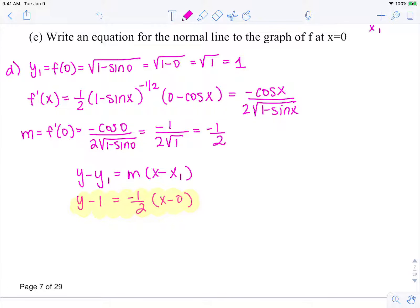So now for part e, we still have our same x1 and y1 as 0 comma 1, but our slope is going to be the perpendicular slope of our tangent line, which is the opposite reciprocal, 2. So our normal line formula is going to be y minus 1 equals 2 times x minus 0.